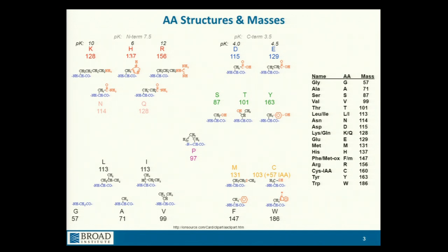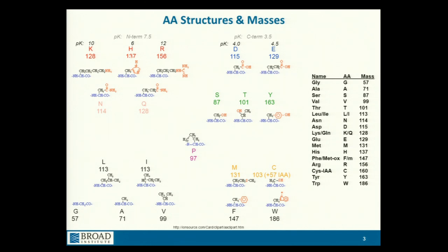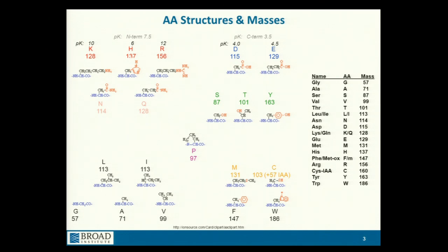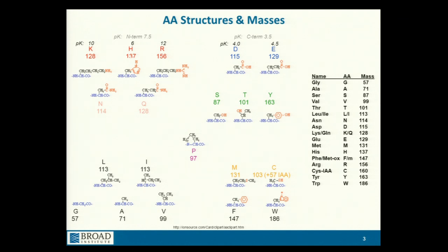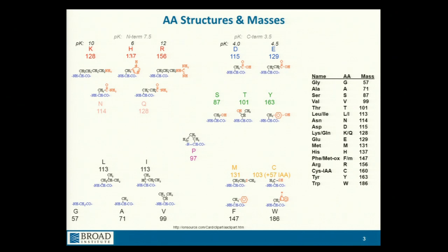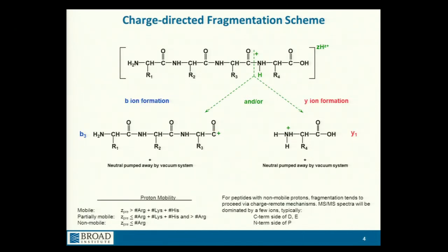Cysteine — if you're trying to memorize the masses, the mass of cysteine is 103, but that's a useless number to remember because we will almost always be modifying the side chain chemically before we do any mass spectrometry. The most common thing to do, as Steve mentioned earlier, is alkylate the side chain with iodoacetamide.